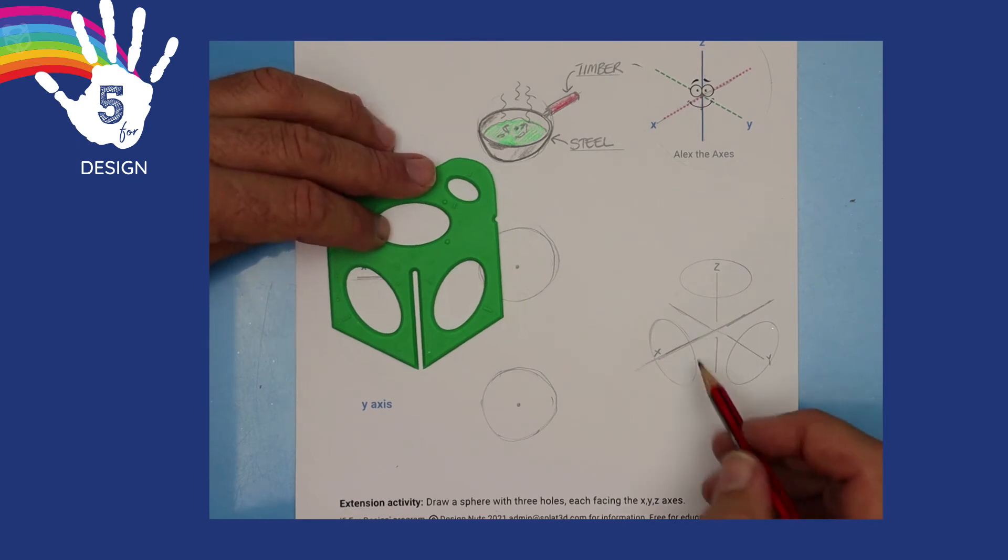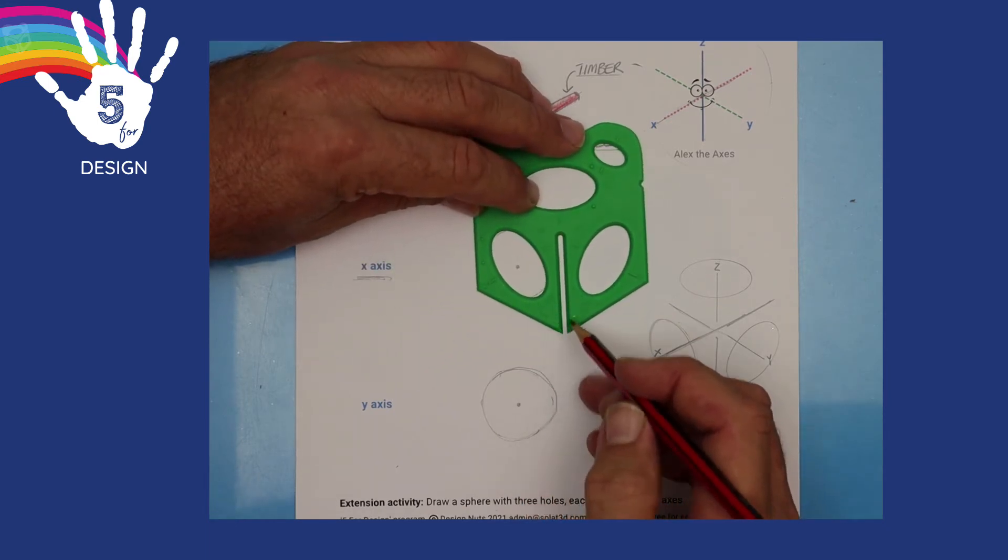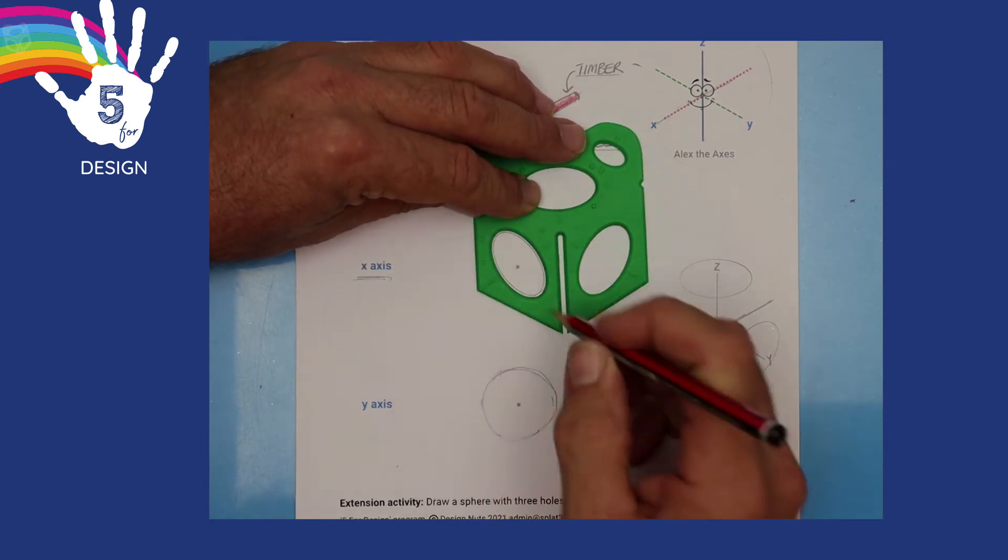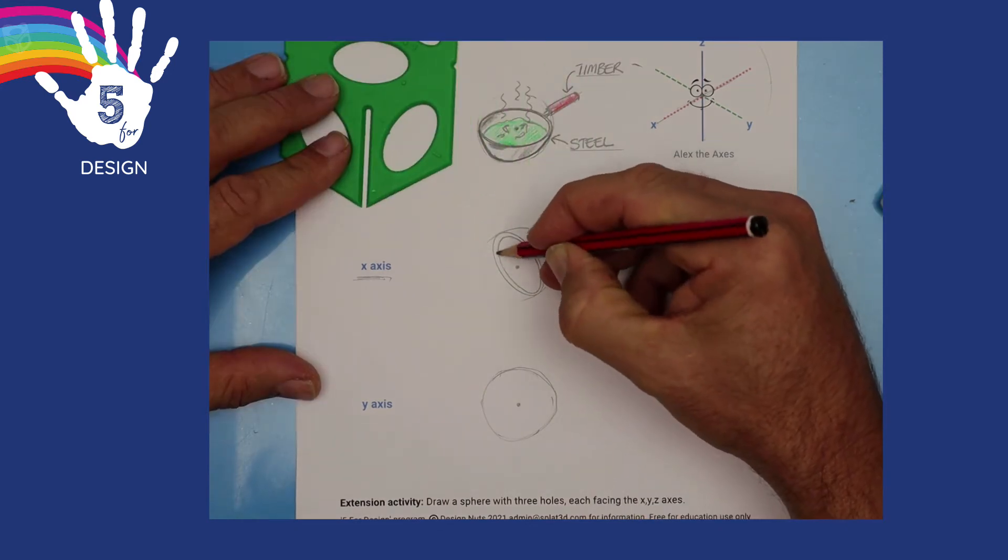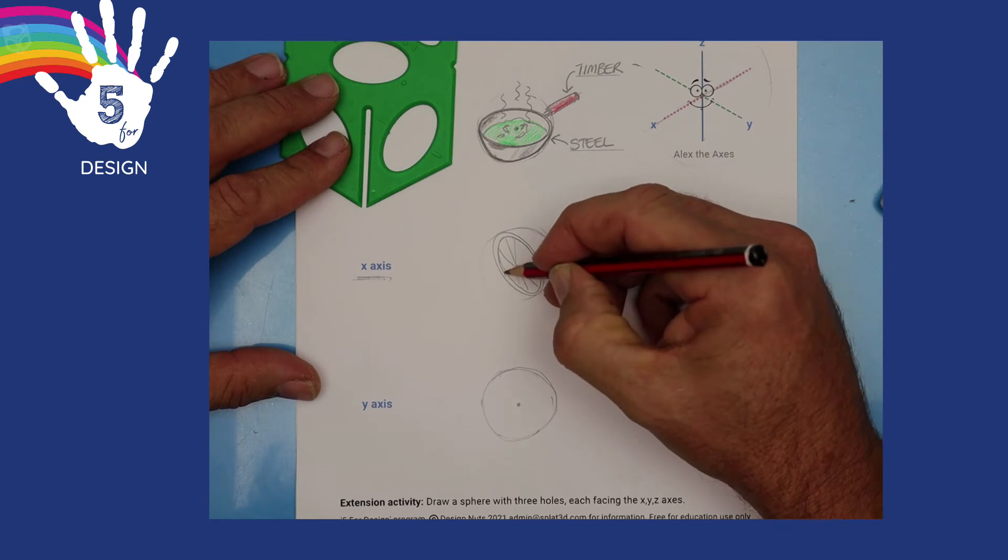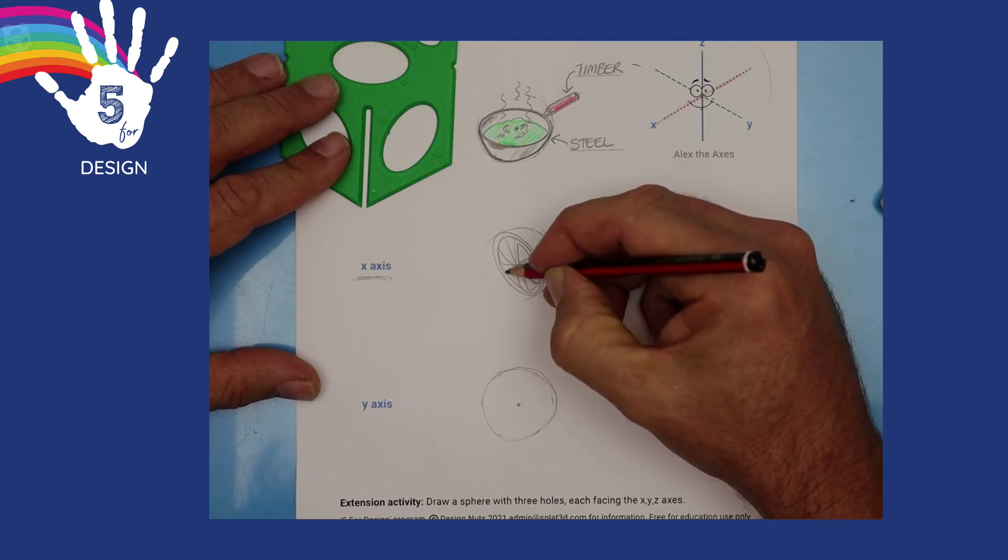So let's choose the X axis. Here's our sphere. Let's slice through like that. And then erase half. So the half that's left could be, for instance, an orange, which is a hemisphere.